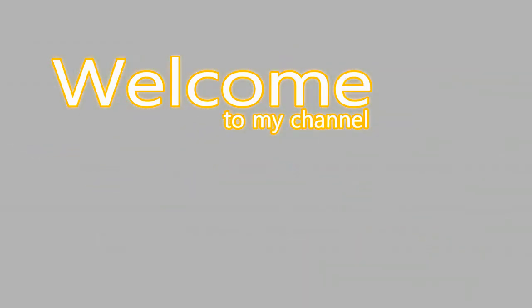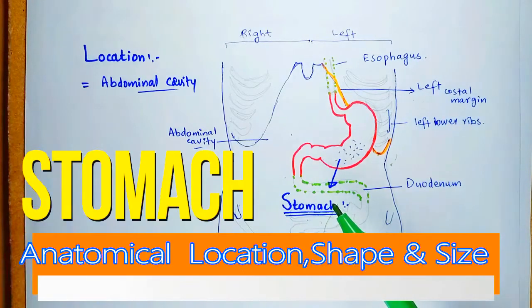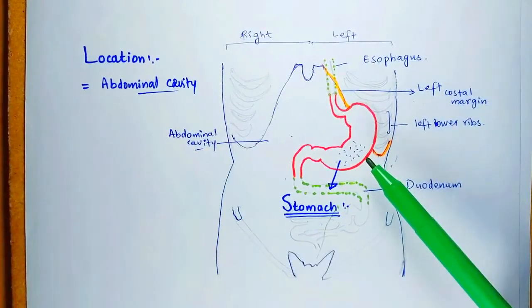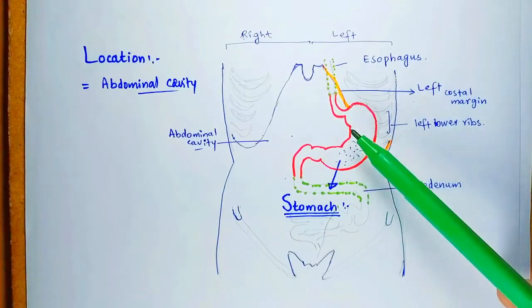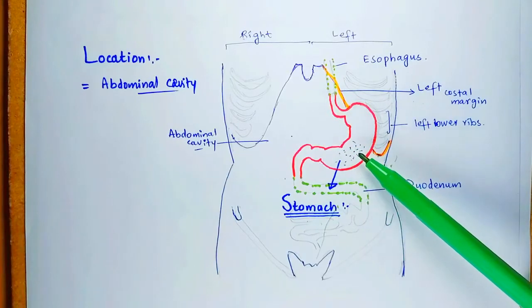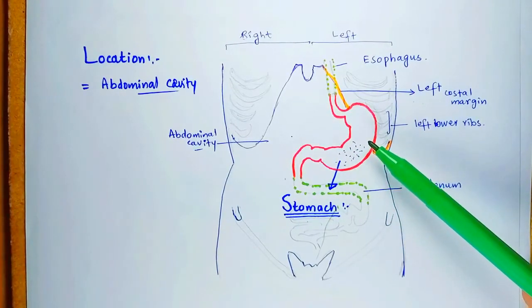Assalamu alaikum students, welcome to my channel. In this video I'm going to talk about the anatomical location, shape, size, and capacity of the stomach. The dilated muscular part of the alimentary canal that lies in the abdominal cavity and acts as a reservoir of food is called the stomach.